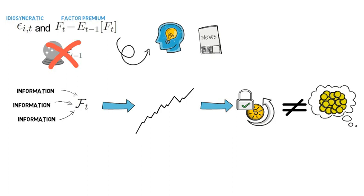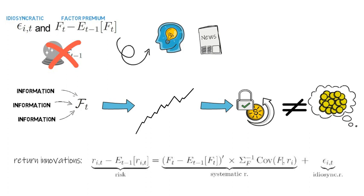Now formally, we can now write return innovations of asset I as follows. So note that factor risk FT minus the conditional expectation of FT as of t minus 1 is unpredictable as of t minus 1.